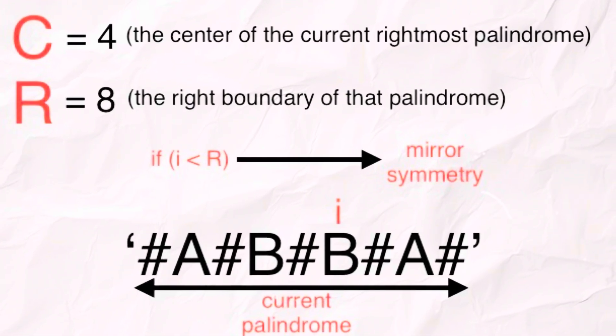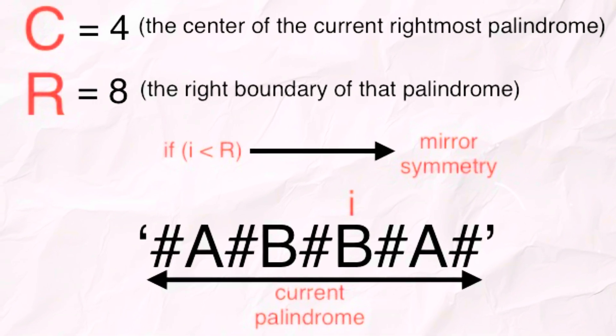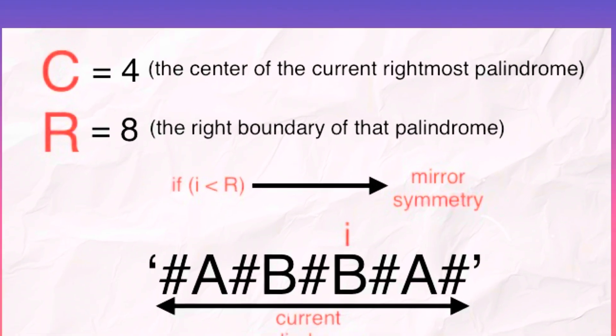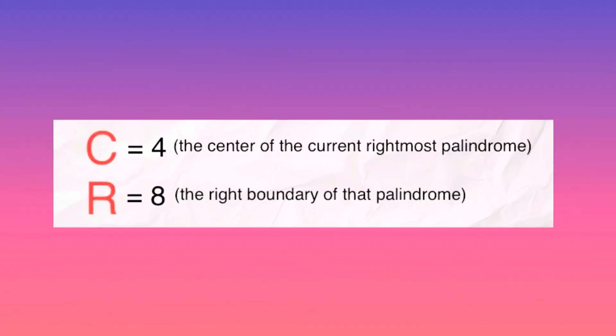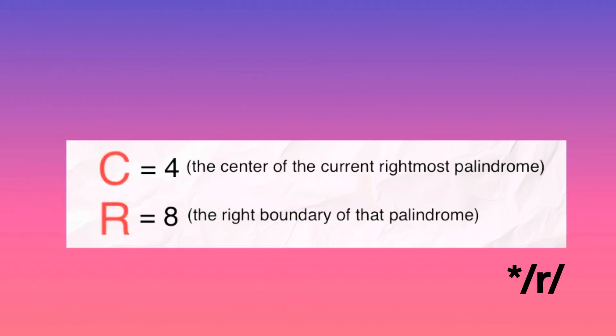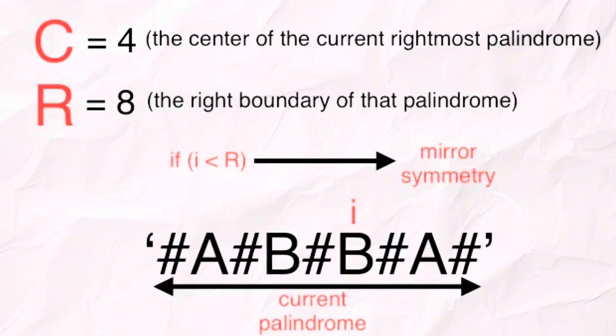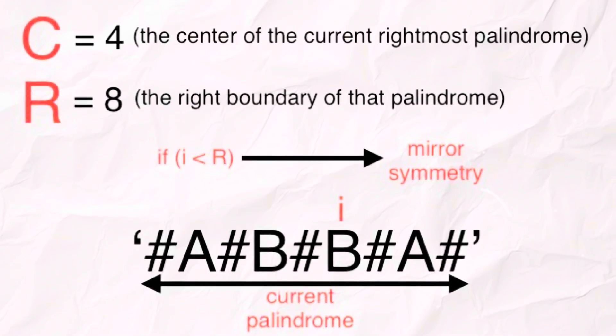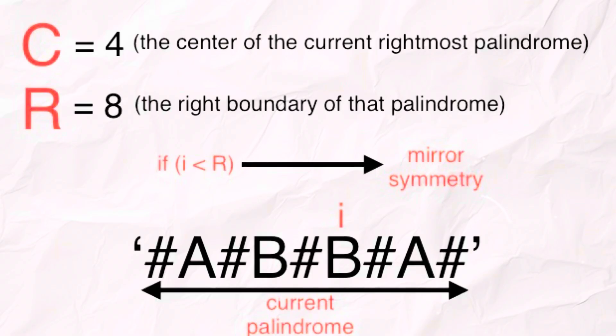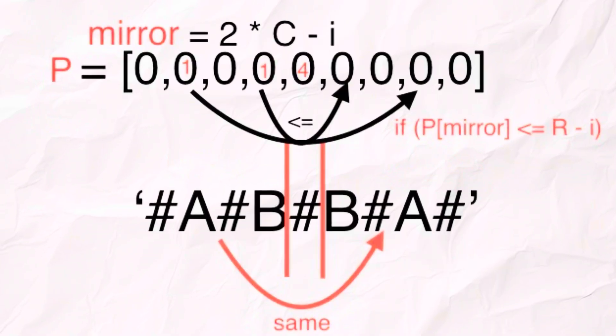But here is the smart part. We remember the rightmost palindrome we have seen so far in order to maintain two important variables: c the center of the current rightmost palindrome and r the right boundary of that palindrome. If our current index i is within the current palindrome, i smaller than r, we take advantage of mirror symmetry.